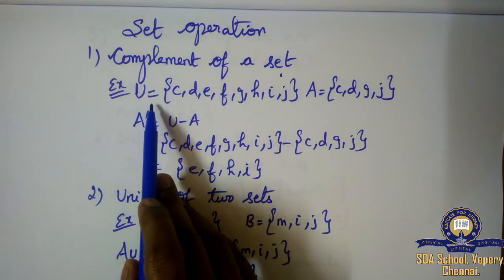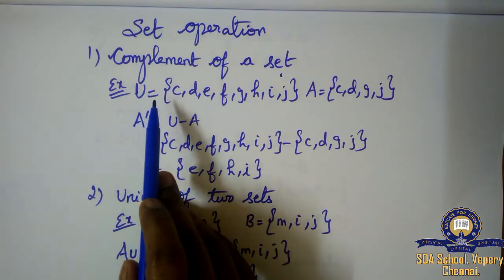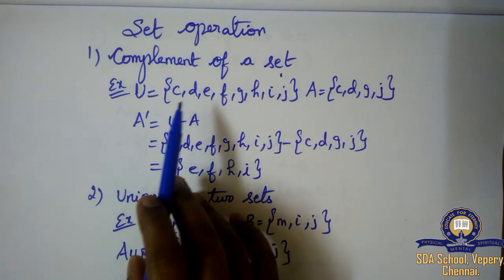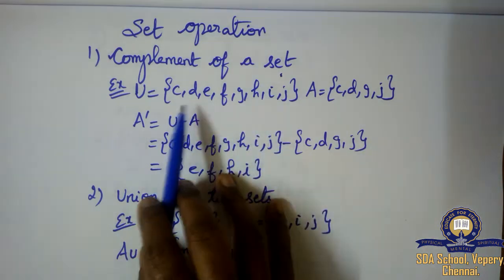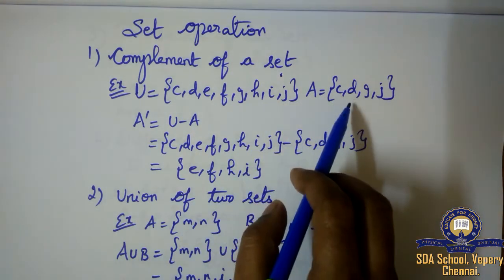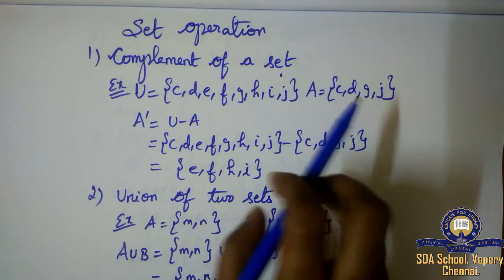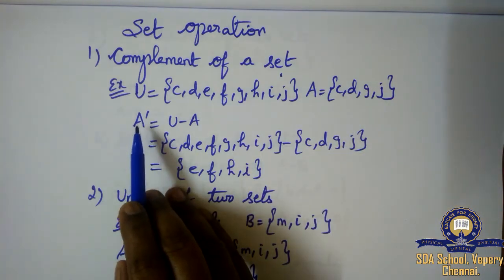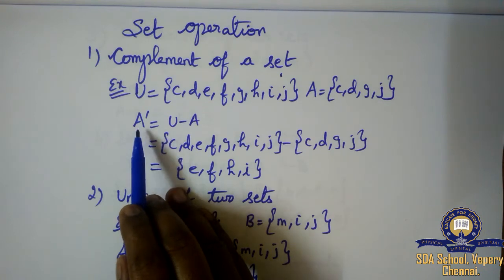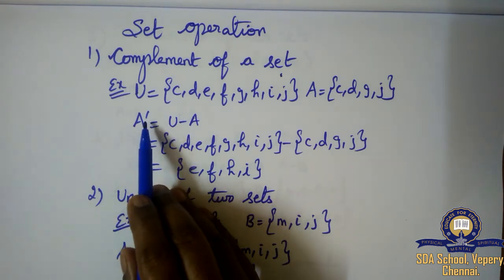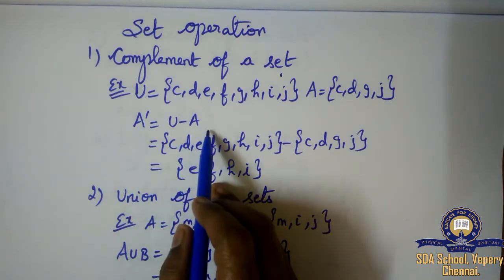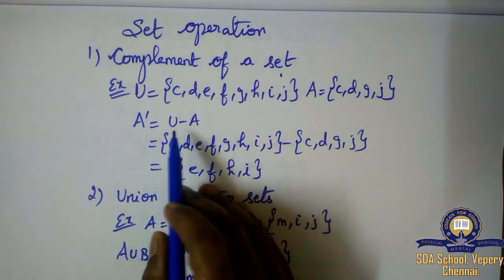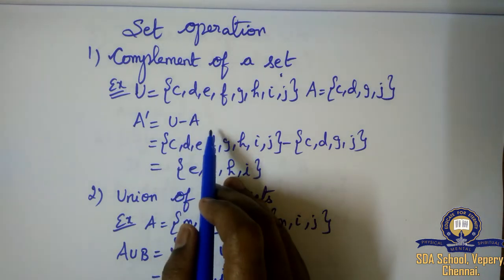So U is equal to... Complement of a set A is the set of all elements of U that are not in A. Complement is denoted as A dash. How to find a complement? A dash means U minus A — that is, the universal set minus A.